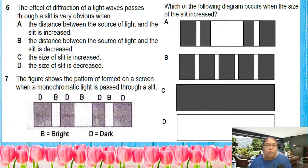Number six: the effect of diffraction of a light wave passing through a slit is most obvious when? What situation produces the most obvious diffraction? We have two situations: first, the slit becomes smaller; another one must be the wavelength becomes bigger. The distance between the source and light is not related. The slit becoming increased is also no. The answer should be D.